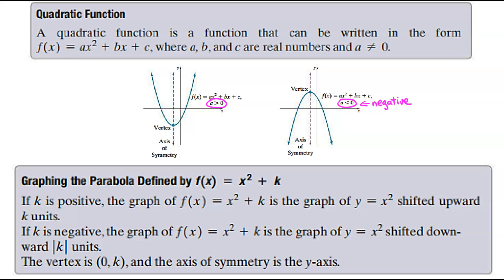You've actually had some exposure to this in a previous chapter this semester, and then we have something called the axis of symmetry. The axis of symmetry is a vertical line that passes through the vertex. It's always going to pass through the vertex, and that's going to help us write the equation of the axis of symmetry, because it is actually an equation since it's a vertical line.